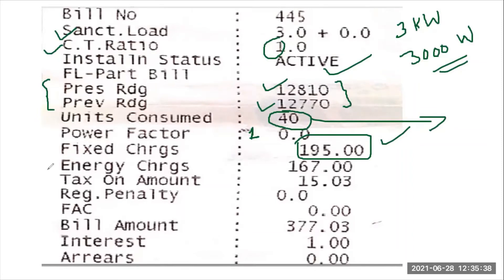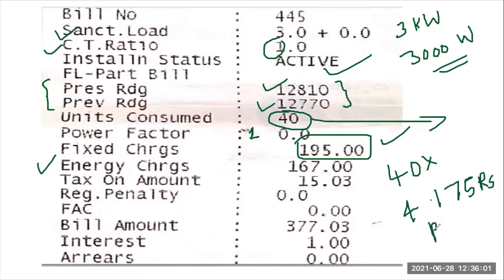Now let's talk about the energy charge. 40 units have been consumed this month. The cost per unit is 4.175 rupees per unit. Multiplying 40 units by 4.175 gives the total energy charge, which is approximately 165 rupees. Note that the cost per unit can vary.